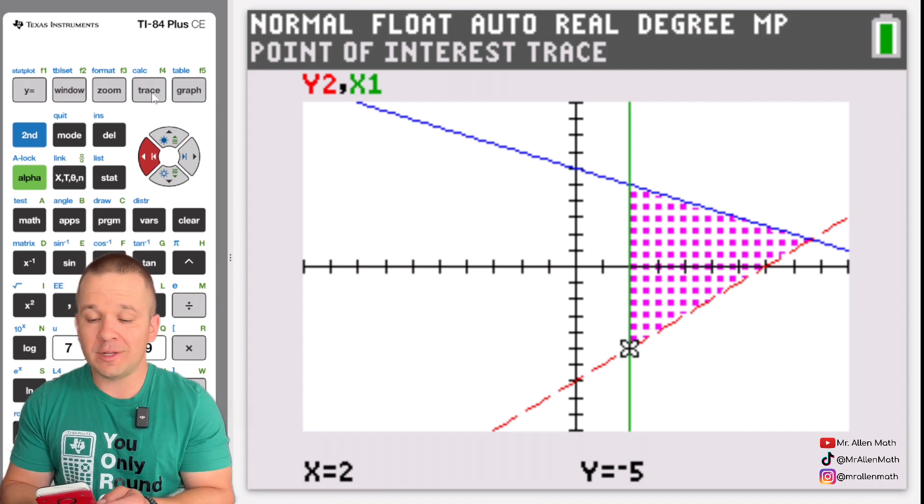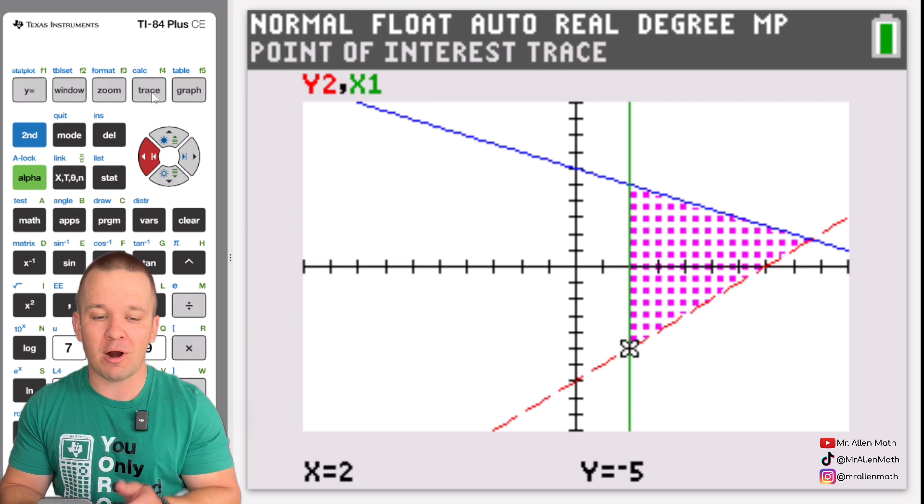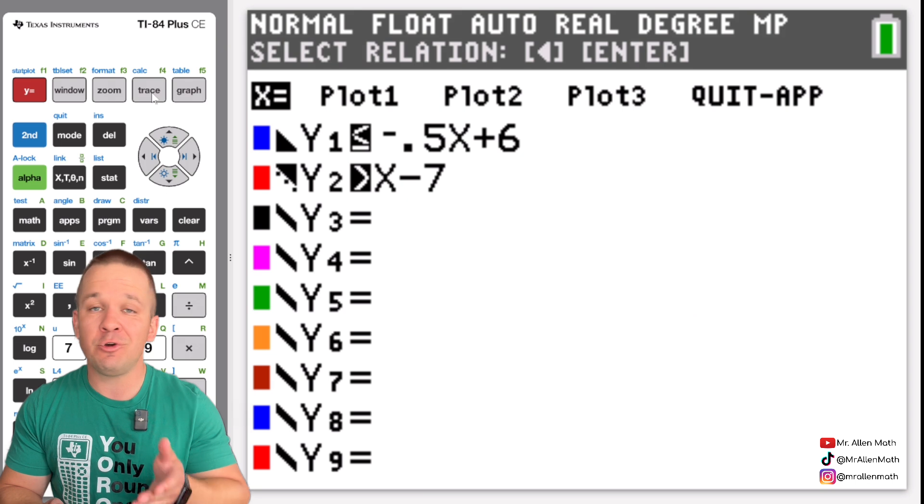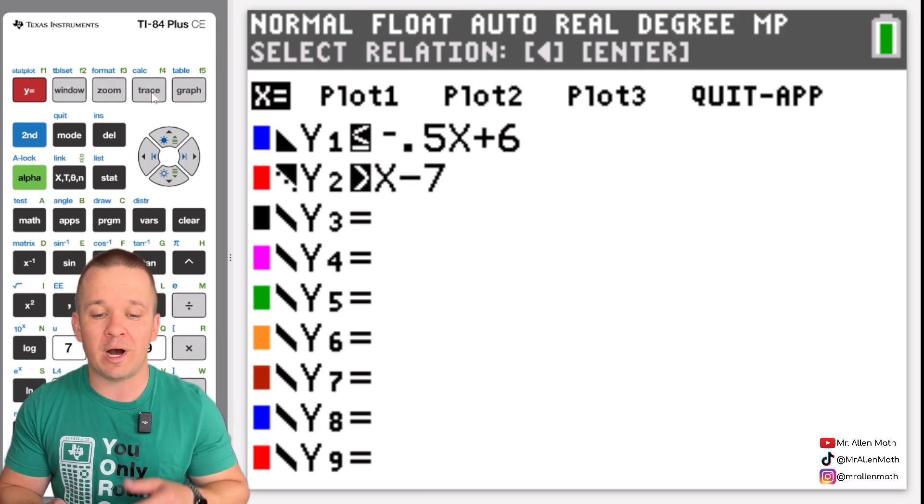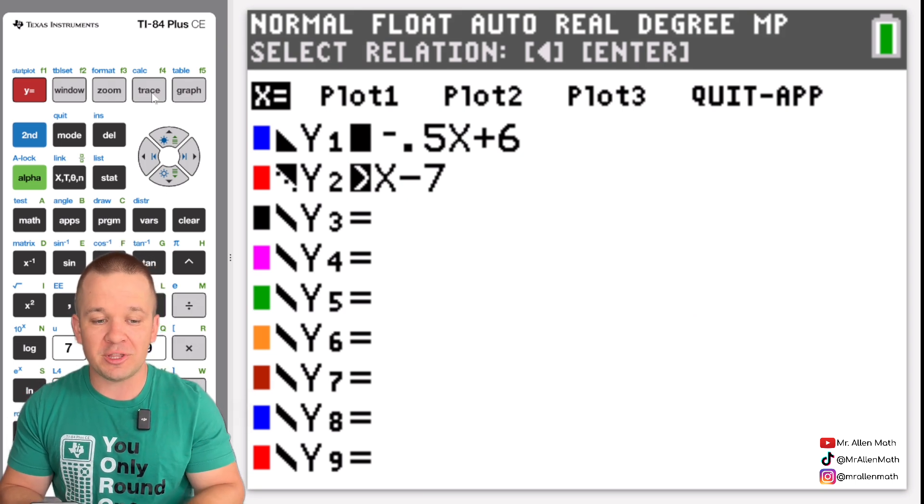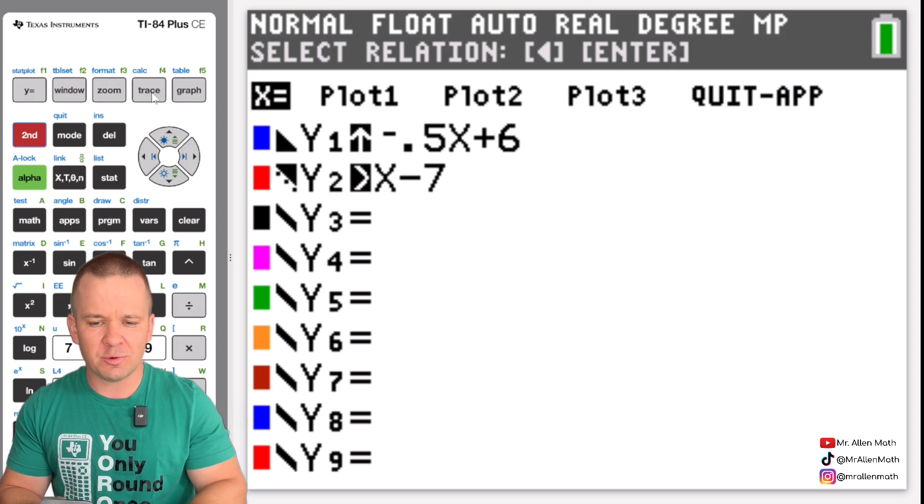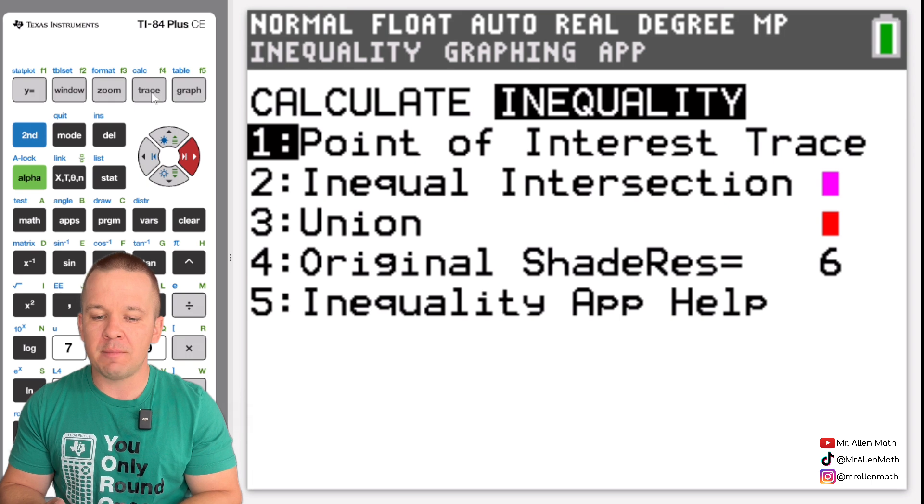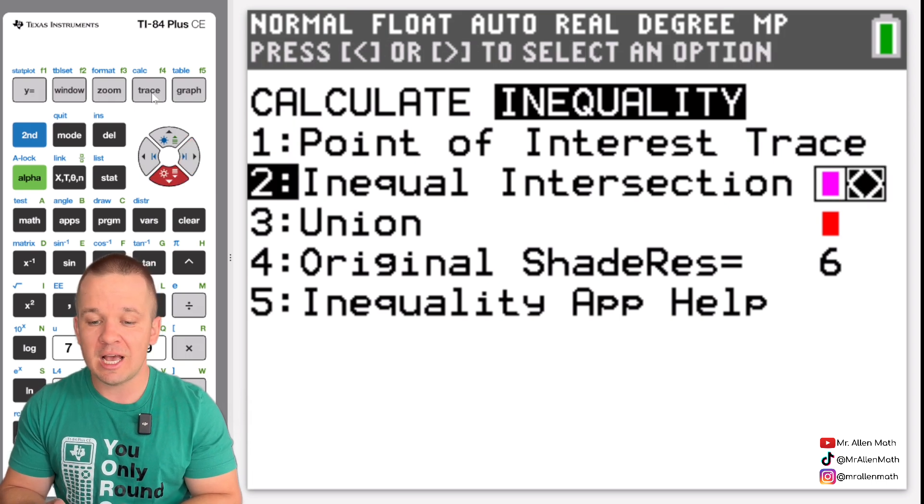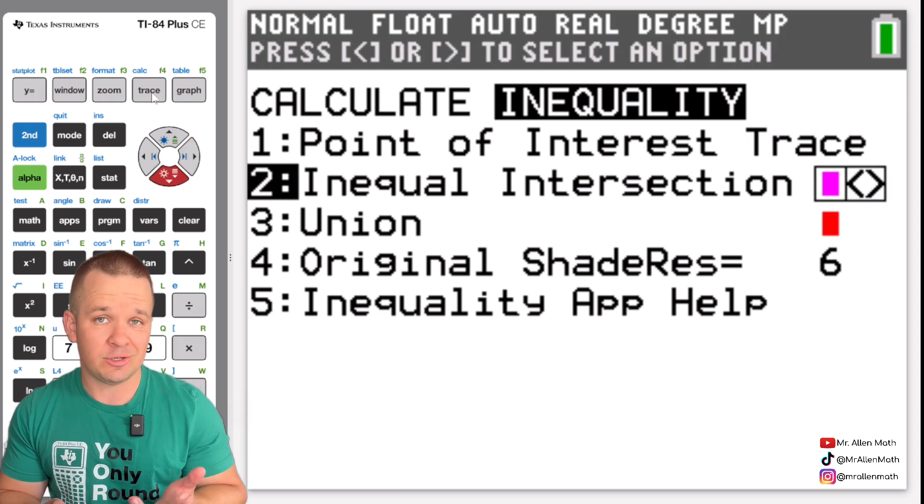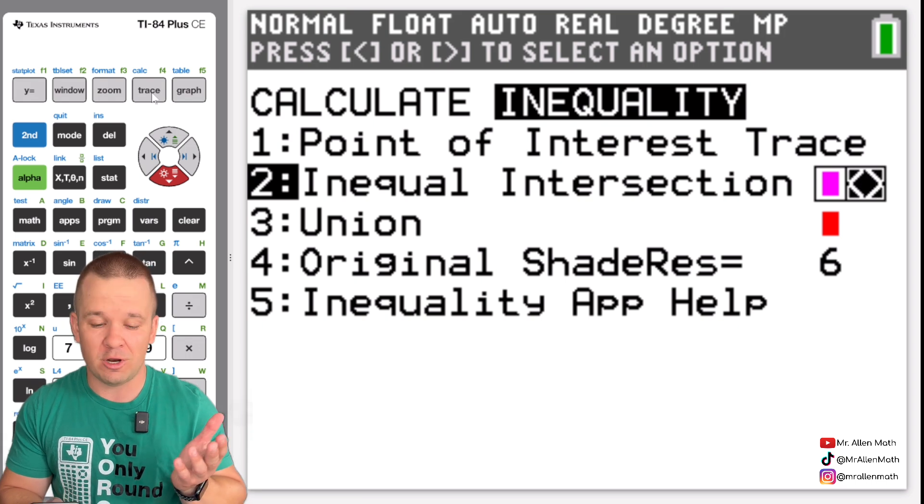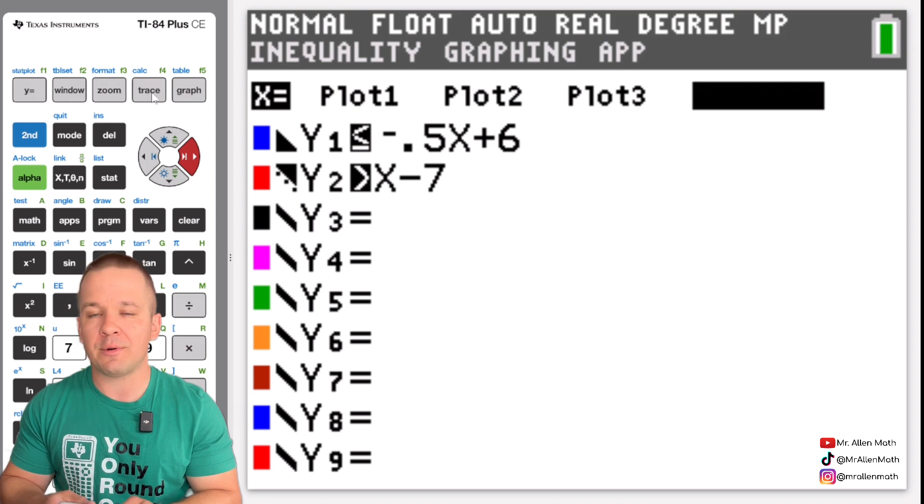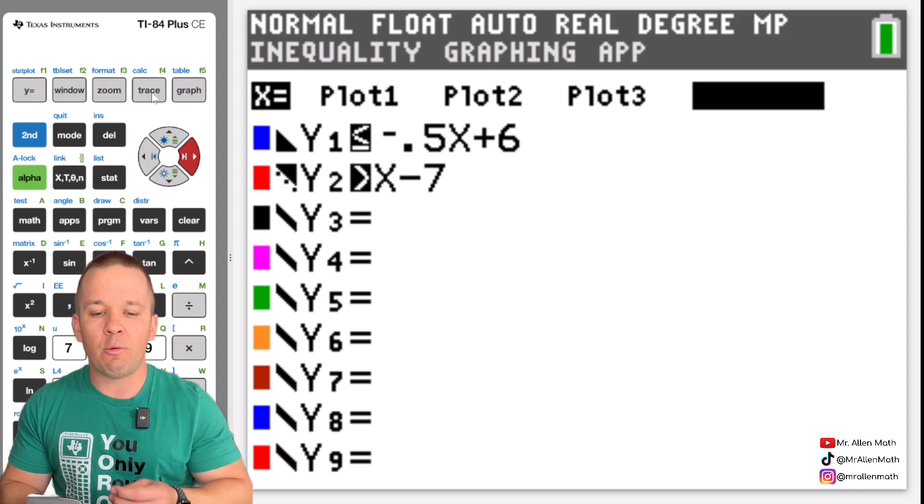So there we go overall that's honestly pretty much the main part of this app so if we go back to our y equals here we can go ahead and quit out of the app you can put as many of these inequalities as you want in here but pretty much that is the gist of things there's really not a whole lot more that I use in this menu here those are the main two the point of intersection trace and the inequality intersections those are the main ones that I adjust the other two I really don't mess with so if we go back to that y equals we arrow up we can go over to quit app.